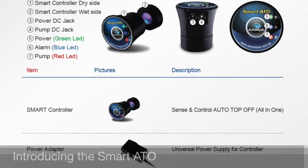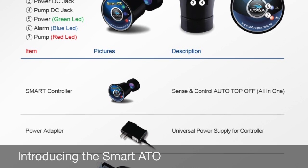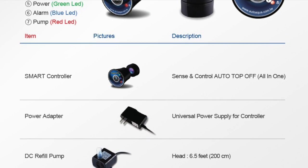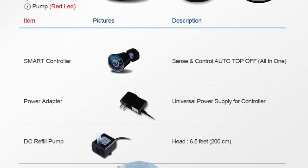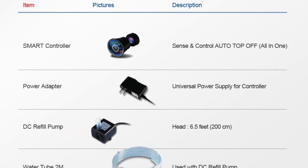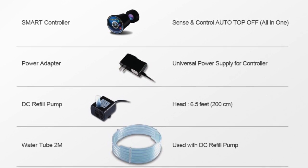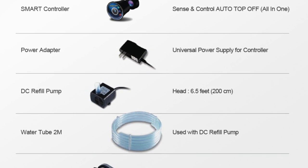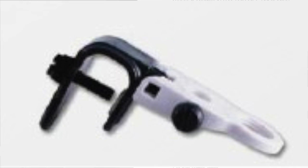Right out of the box, the SmartATO comes with a smart controller which can be magnetically attached to your sump, a power adapter, a small yet powerful refill pump and water tubing. The tubing is attached via a clip which can be modified to fit a rimless or a regular tank.